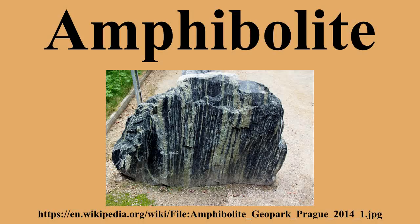Amphibolite is a grouping of rocks composed mainly of amphibole and plagioclase feldspar with little or no quartz. It is typically dark-colored and heavy, with a weakly foliated schistose structure. The small flakes of black and white in the rock often give it a salt-and-pepper appearance.